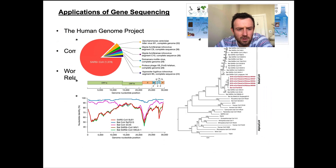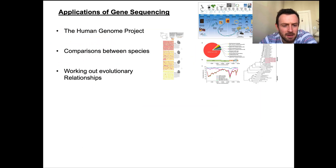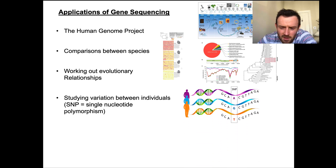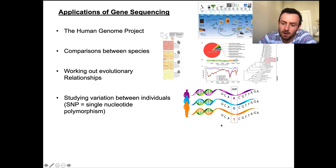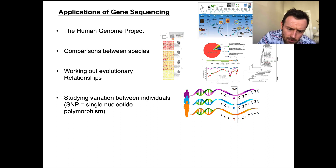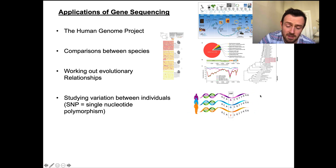Beyond comparing species, we can also study variation between individuals of the same species. A SNP — single nucleotide polymorphism — means there are hundreds of thousands of places in the human genome where my genome might differ from yours in just a few key points. Scientists are mapping all these SNPs and linking them to various traits.